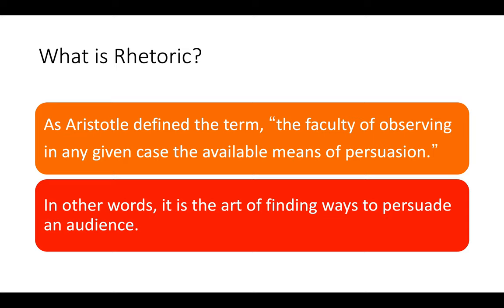Academic literacy is going to begin with critical thinking and rhetoric. We're going to start with rhetoric. Aristotle is the one who defined the term rhetoric. He said it is the faculty of observing in any given case the available means of persuasion. So essentially, rhetoric is the art of finding ways to persuade an audience.